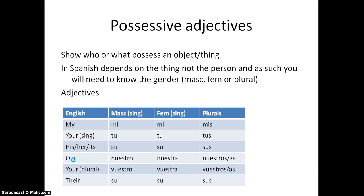Now, unlike in English, they change sometimes depending on whether the noun is masculine or feminine, or plural. But it doesn't depend on the person who is doing the possessing — it depends on the thing that's being possessed. So if it was 'my house', it's the house that controls what the possessive adjective is. You don't really see much difference with 'my', but if you look at 'our', for example, 'our' changes for masculine and feminine. We'll see some examples in a minute.